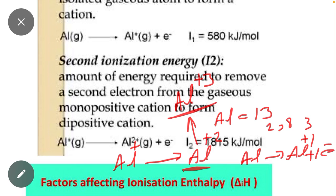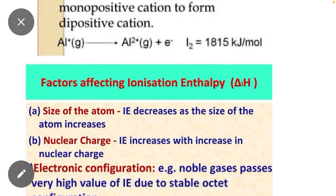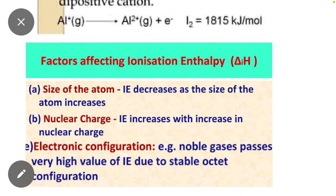Keep in mind, the first ionization energy is always lowest; second and third ionization energy is always greater, because it is difficult to remove an electron from a positive ion. Now we will study the factors affecting ionization energy.